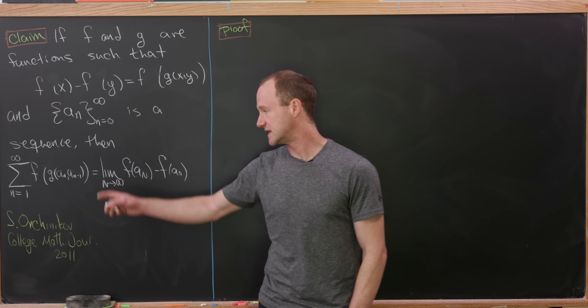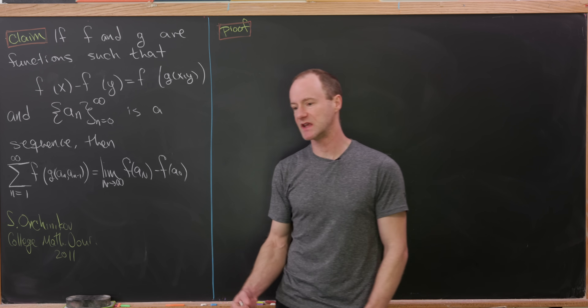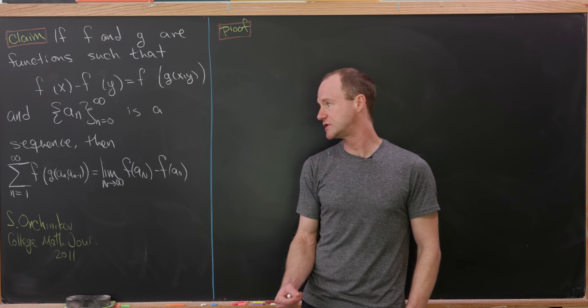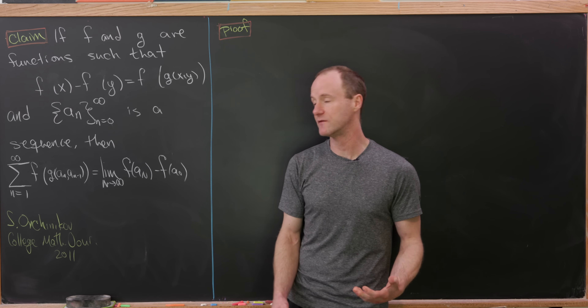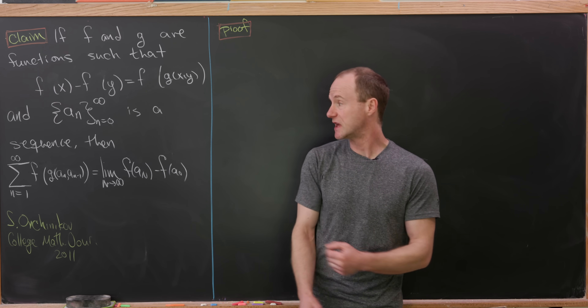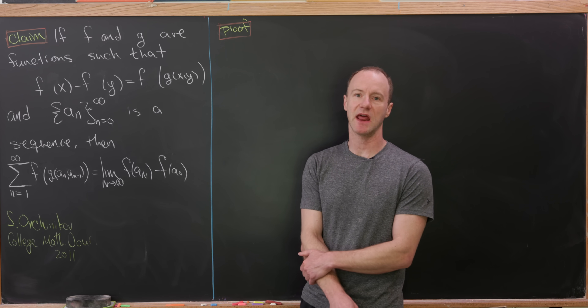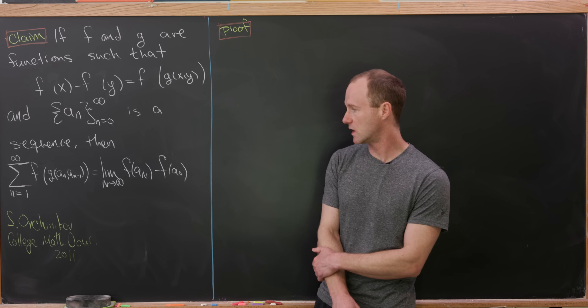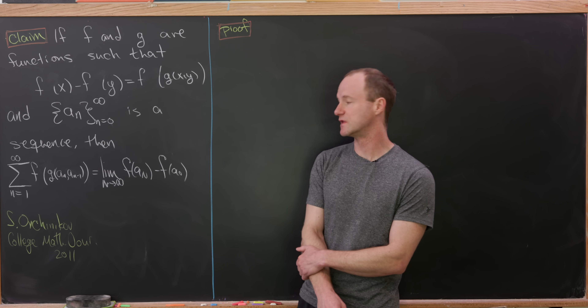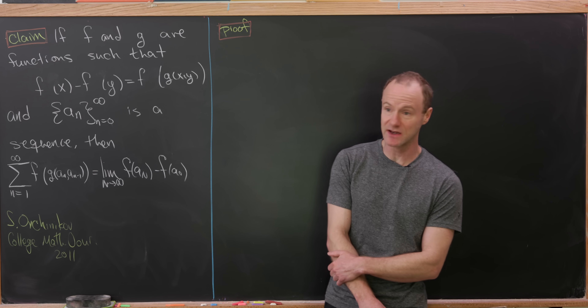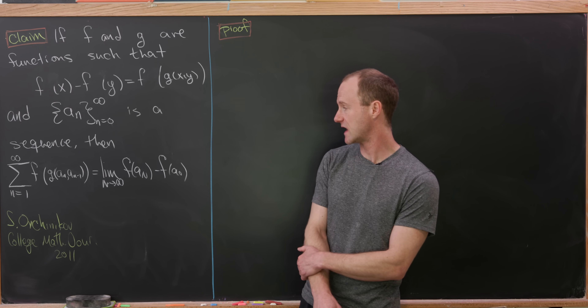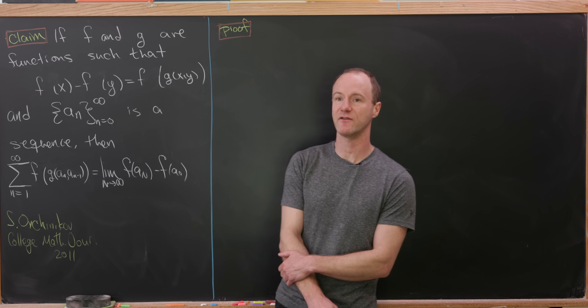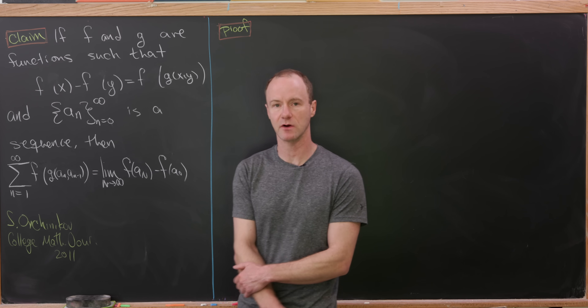The result is that the sum as n goes from 1 to infinity of f of g of a_n, a_{n-1} is equal to the limit as n goes to infinity of f of a_n minus f of a_0.